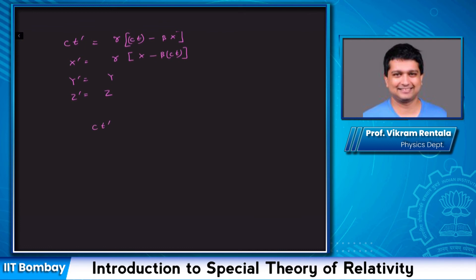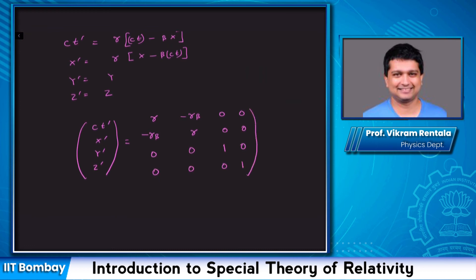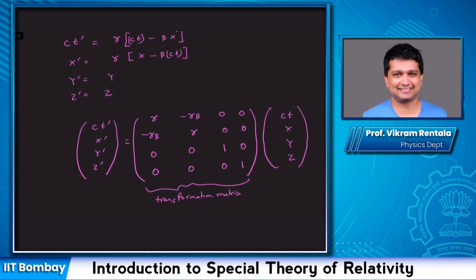In matrix notation: (ct′, x′, y′, z′)ᵀ equals the transformation matrix acting on (ct, x, y, z)ᵀ, where the matrix is [[γ, −γβ, 0, 0], [−γβ, γ, 0, 0], [0, 0, 1, 0], [0, 0, 0, 1]]. This transformation matrix acts on the space-time coordinates and gives us our dictionary, translating coordinates (t, x, y, z) from one observer to those measured by a second observer.